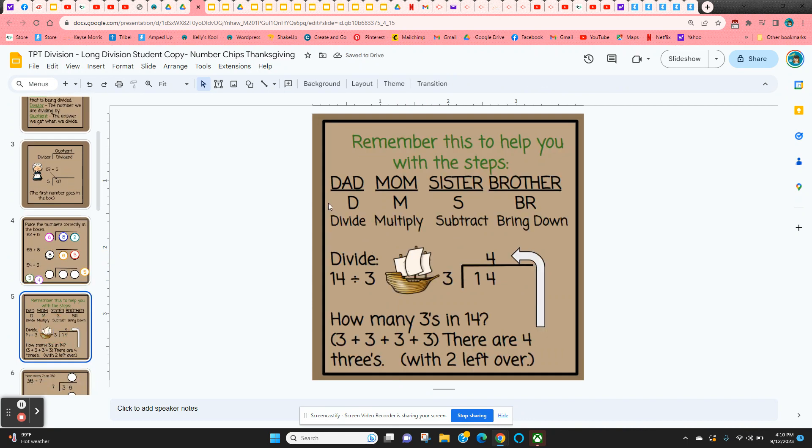And then it gives them a little acronym that might help. We use the steps dad, mom, sister, brother for divide, multiply, subtract, and bring down. And it starts with divide. That's the first step. So here we have 14 divided by 3. How many times does 3 go into 14? Four times.